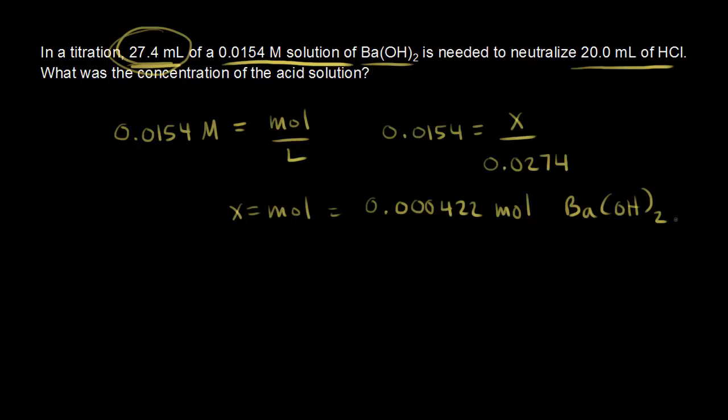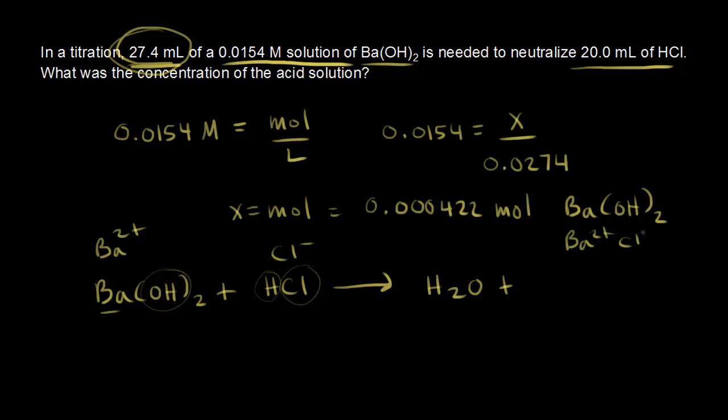Next, let's write the neutralization reaction. So we have barium hydroxide reacts with HCl. So barium hydroxide plus HCl gives us, for our products, we have H plus and OH minus, so that's H₂O. And then our other product, this is barium two plus and we have Cl minus one. So you could cross those over. So BaCl₂. Barium chloride is our other product here.